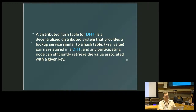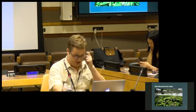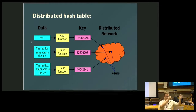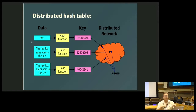If you have a key and a value that you want to store, you can pick a node and store it. So you have data that comes in, a key that is hashed, that hash then tells you which nodes to store the data on, and then you can retrieve that data based on the hash of the key in the future.